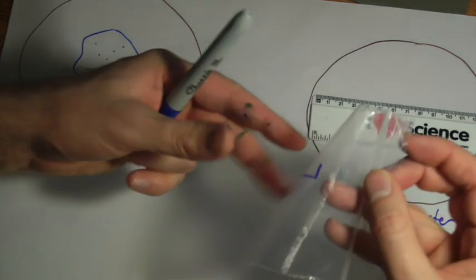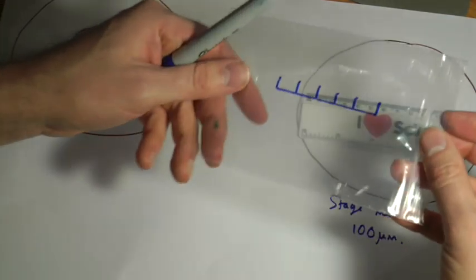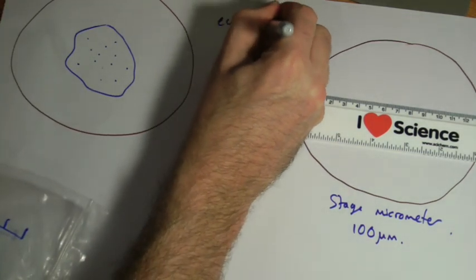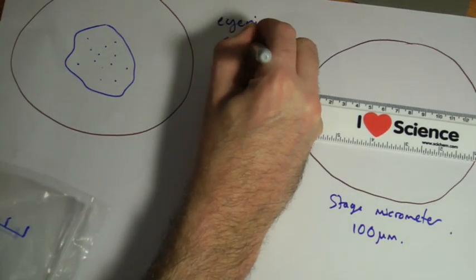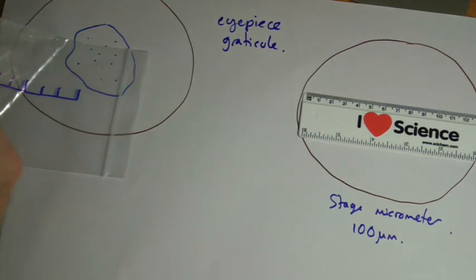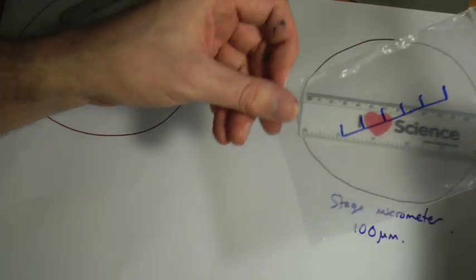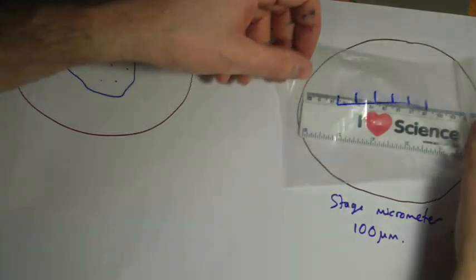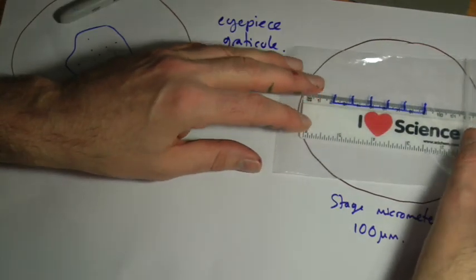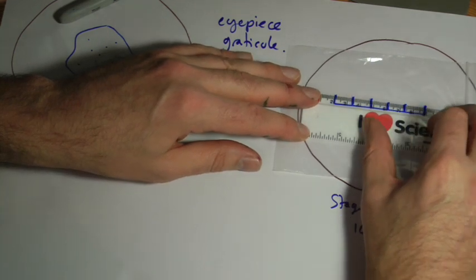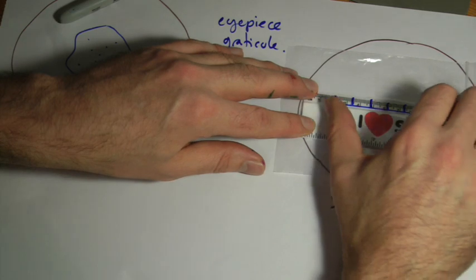So we have something which is called an eyepiece graticule. And this would fit in the eyepiece lens. And all this is, is a little scale with no numbers on it. And what you would do is first of all you would focus this and you turn it around until it matches up with your ruler. And you then look for two lines that match on the ruler.